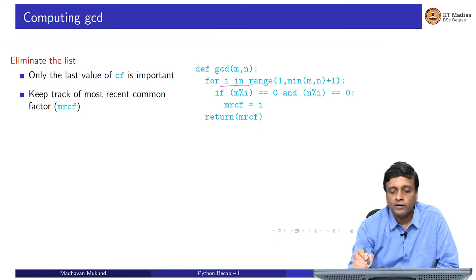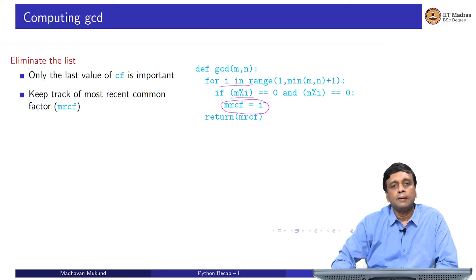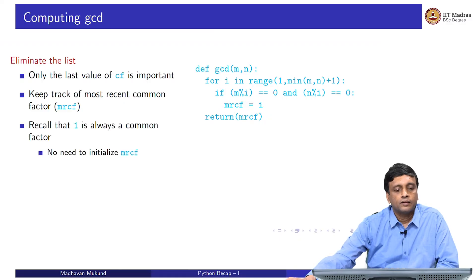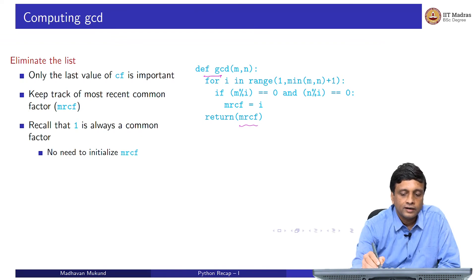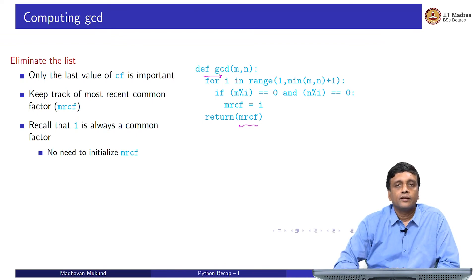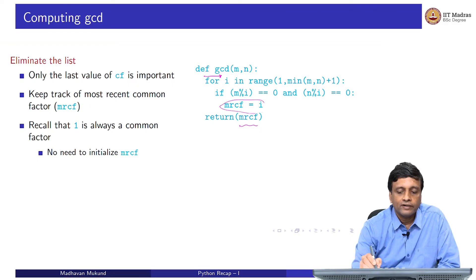Here we have a different version of the same code where we eliminate the list. We have the same for, and we have the same if, but now whenever we find a common factor, we just update this name MRCF, most recent common factor to be i. We have not initialized this. Is this a problem? Will we reach this return statement and return a value which has never been defined? Recall that 1 is always a divisor. 1 will always be a common factor. Even though we do not initialize MRCF here, like we did for the list, when we first encounter 1, we are going to get a value here.